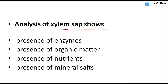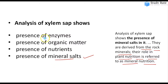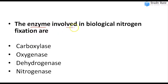Seventh question: Analysis of xylem sap shows the presence of mineral salts. These mineral salts are derived from root minerals and their main role is to provide mineral nutrition to the plant.